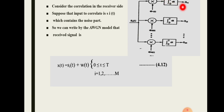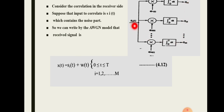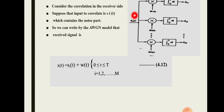When we represent the signal as a vector at the receiver side using this model, we obtain different vector components. The received signal si(t) produces components si1, si2, and so on up to siN — there are N components for the received signal. In this model, no noise is shown.